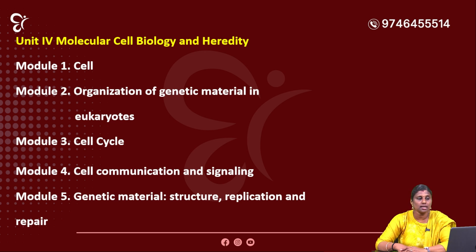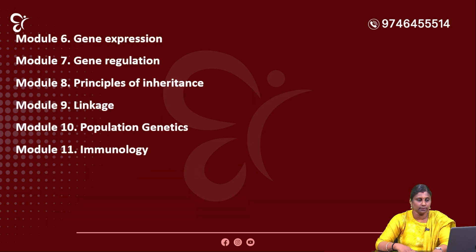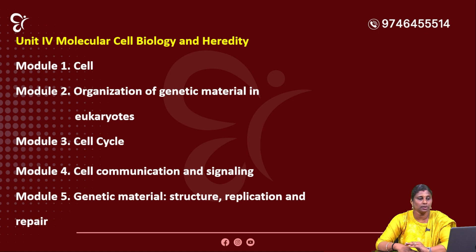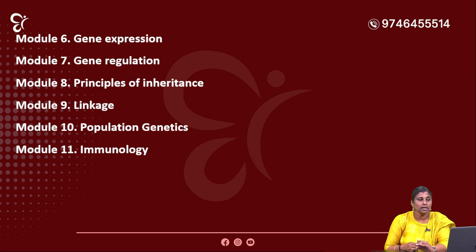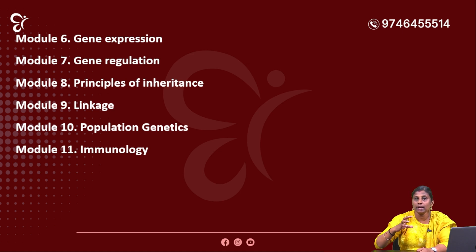Unit 4: Molecular Cell Biology and Heredity. It has 10 modules: 1. Cells, 2. Organization of Genetic Materials and Eukaryotes, 3. Cell Cycle, 4. Cell Communication and Signaling, 5. Genetic Materials Structure Replication and Repair, 6. Gene Expression, Gene Regulation, Inheritance. Gene regulation is a particularly high-content area. There are many questions in Unit 4, and also many in Units 2 and 4 combined.